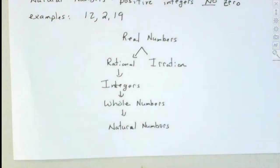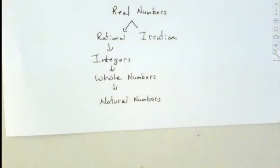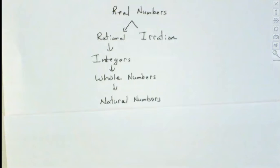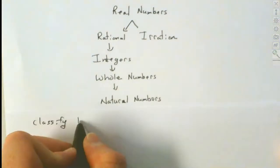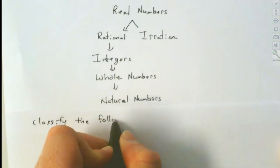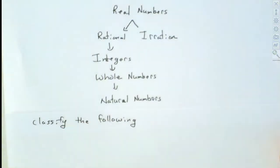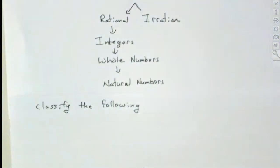In college algebra, you'll learn there are real and non-real numbers, but we don't discuss those — that's beyond the scope of this course. All we talk about is real numbers. Now, this tree is going to help us classify numbers. A number when we classify it is usually more than one type, and almost all of them are going to be more than one type.